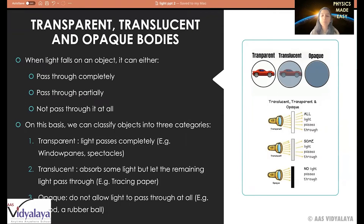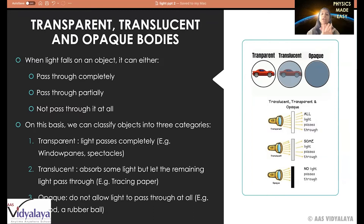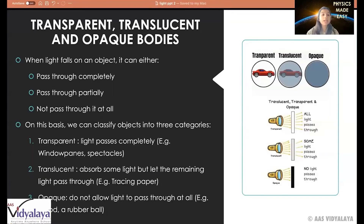The last category is opaque objects, and these are generally the most common. Let's say even this mouse I'm using for my presentation — that is an opaque object. Even the plant on my table is an opaque object, because I can't see anything on the other side; it's blocking all the light. So that can be considered an opaque object.